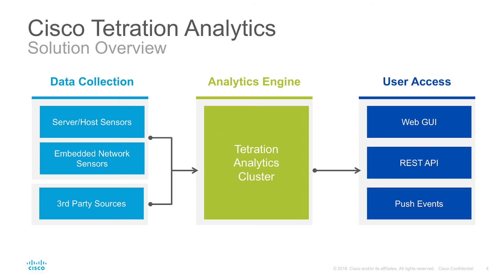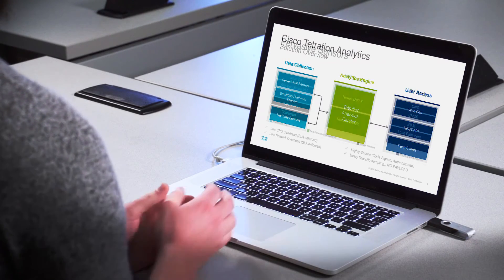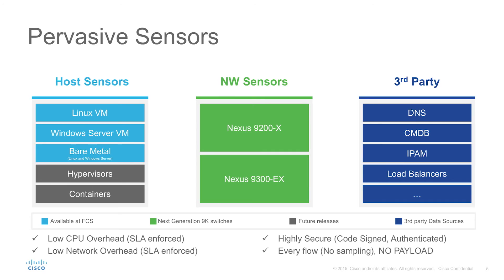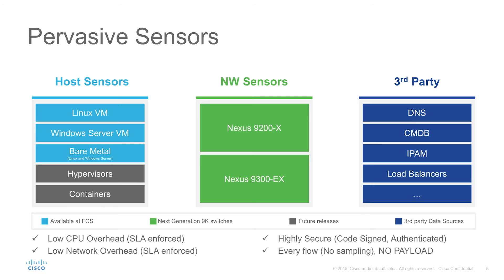The software sensors support both Linux and Windows operating systems and can be used in a virtualized or bare-metal environment. The network sensors are supported with the new Nexus 9000 switches with the dash-X on the end. It's important to remember that you can use either or — if you don't have the Nexus 9000 switches you can just use the software sensors; if you cannot use the software sensors you can just use the Nexus 9000 switches. Furthermore, both can be combined for even greater effect.